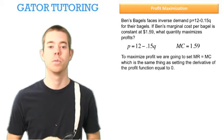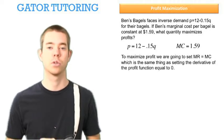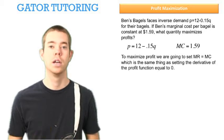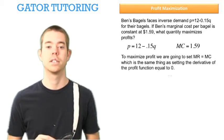To maximize profit, we're going to set marginal revenue equal to marginal cost. This is the exact same thing as taking the derivative of the profit function and setting it equal to zero. Let's see how.